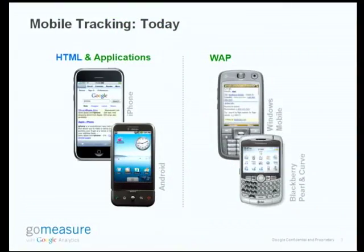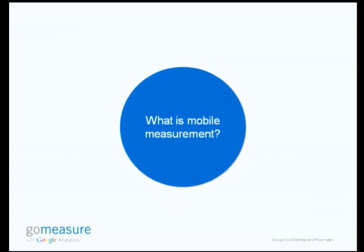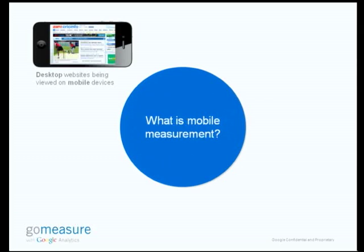We've also iterated on the product to add in application tracking and feature phone tracking, and that kind of makes up the tenets of mobile measurement. For those of you who don't have a mobile property yet, you already are seeing mobile visitors on your desktop site, and it's important to know how those visitors behave. That can dictate your development on application platforms, on mobile websites, and how you want to optimize your mobile experience.